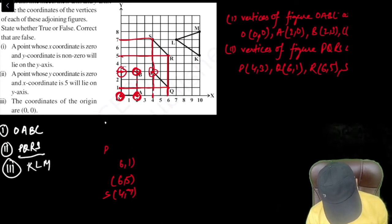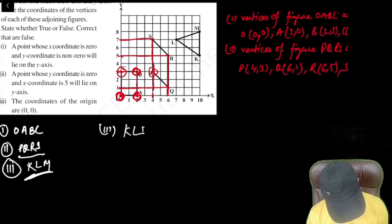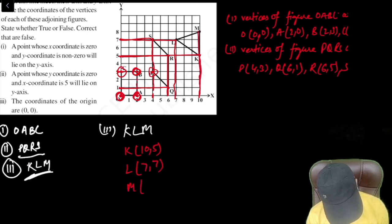Now we can do third one. Third one is KLM. Now K point is 10 on X axis, 5 on Y axis. So K is 10,5. L: 7 on X axis, 7 on Y axis, 7,7. M: 10 on X axis and 8 on Y axis. So it is 10,8.